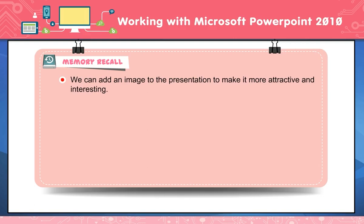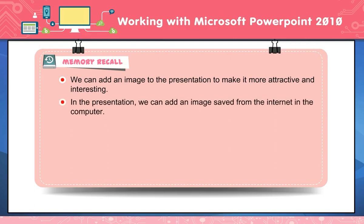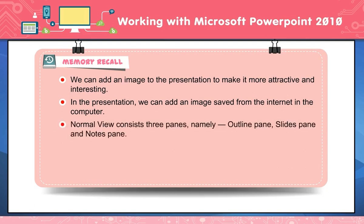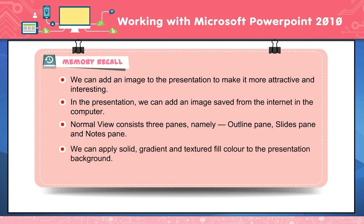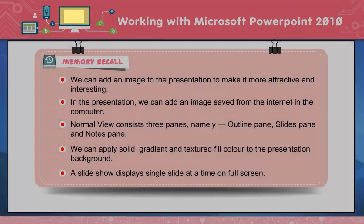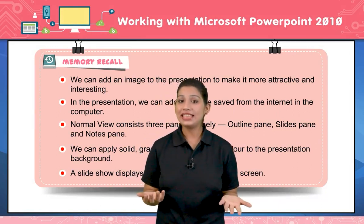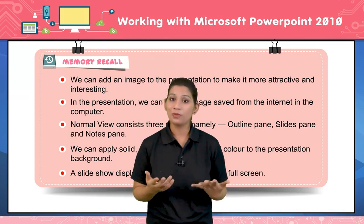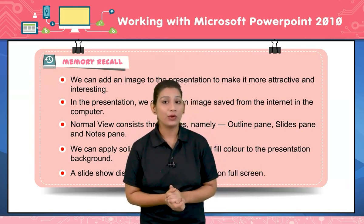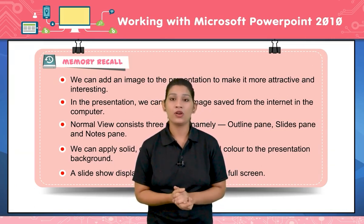Memory recall: we can add an image to the presentation to make it more attractive and interesting, including images saved from the internet. Normal view consists of three panes: Outline pane, Slides pane, and Notes pane. We can apply solid, gradient, and textured fill color to the presentation background. A slideshow displays a single slide at a time on full screen. That's all students — for today's session on Microsoft PowerPoint, you learned different techniques and methods to make your presentation better. I hope you are now aware of how to work with Microsoft PowerPoint 2010.